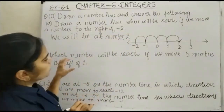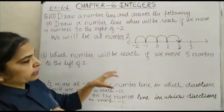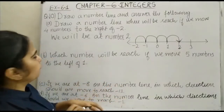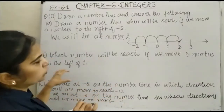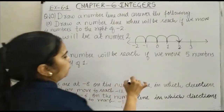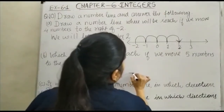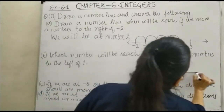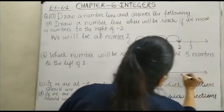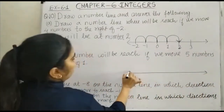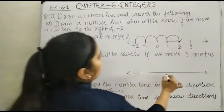Now, which number will we reach if we move 5 numbers to the left of 1? Here you can see, here is our number line.